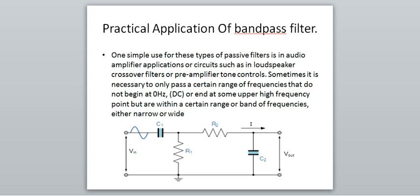Concluding with the practical application of a bandpass filter — a simple use for these types of passive filters is in audio amplifier applications, such as loudspeaker crossovers and amplifier tone controls. In a bandpass filter, we pass a certain range of frequencies. At the end, there are some upper and lower high-frequency cut-off points that are within a certain band of frequencies, either narrow or wide.